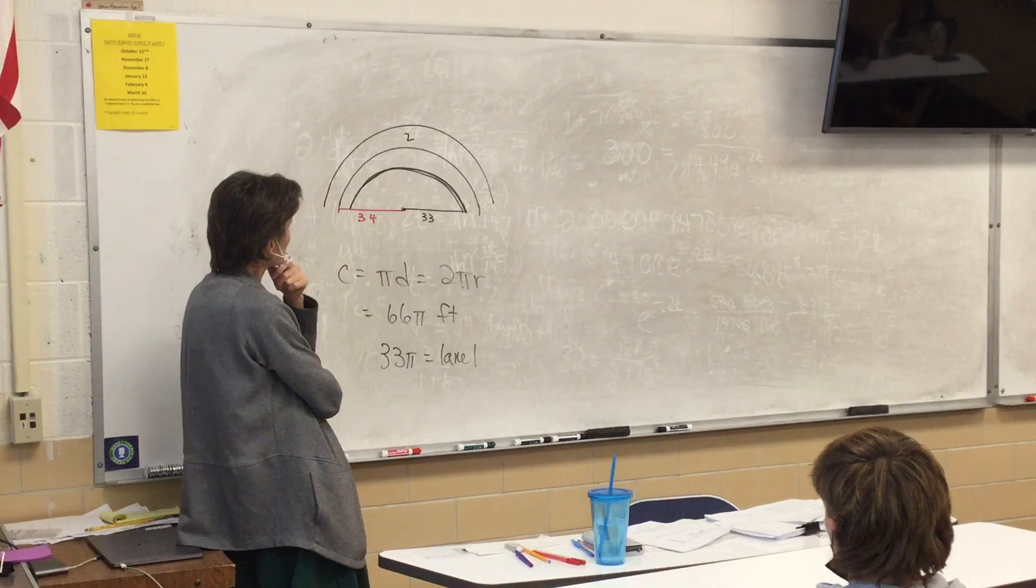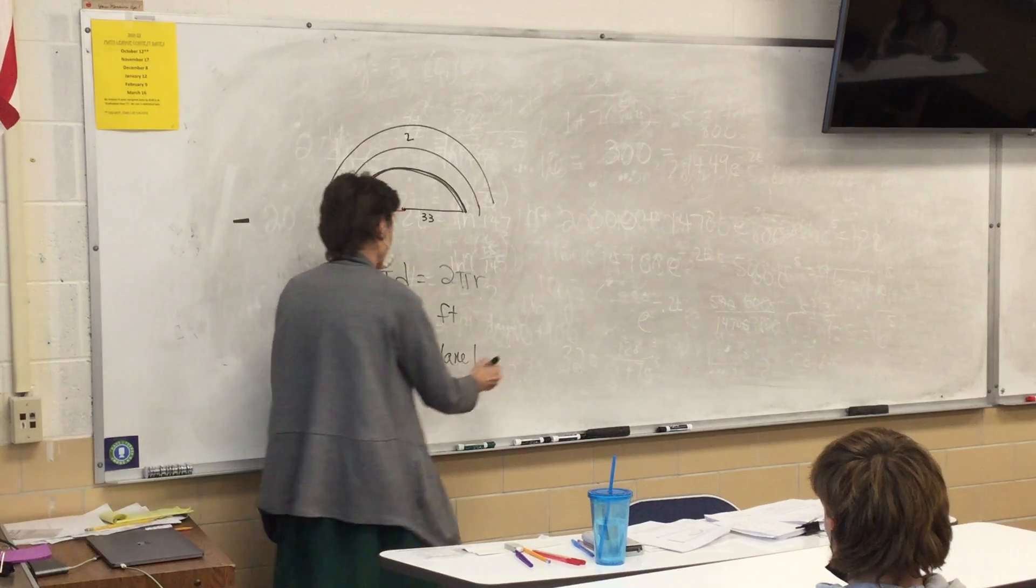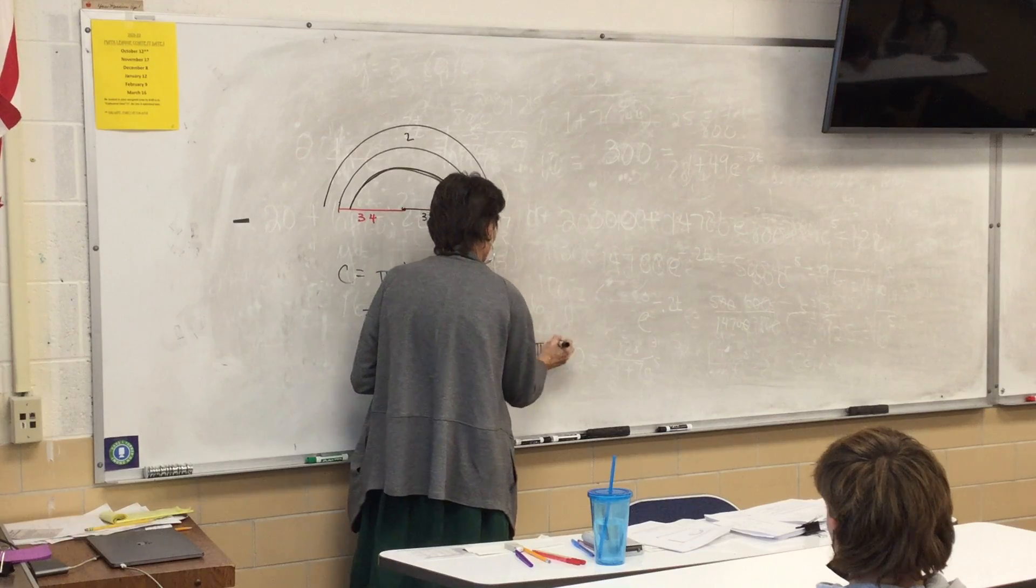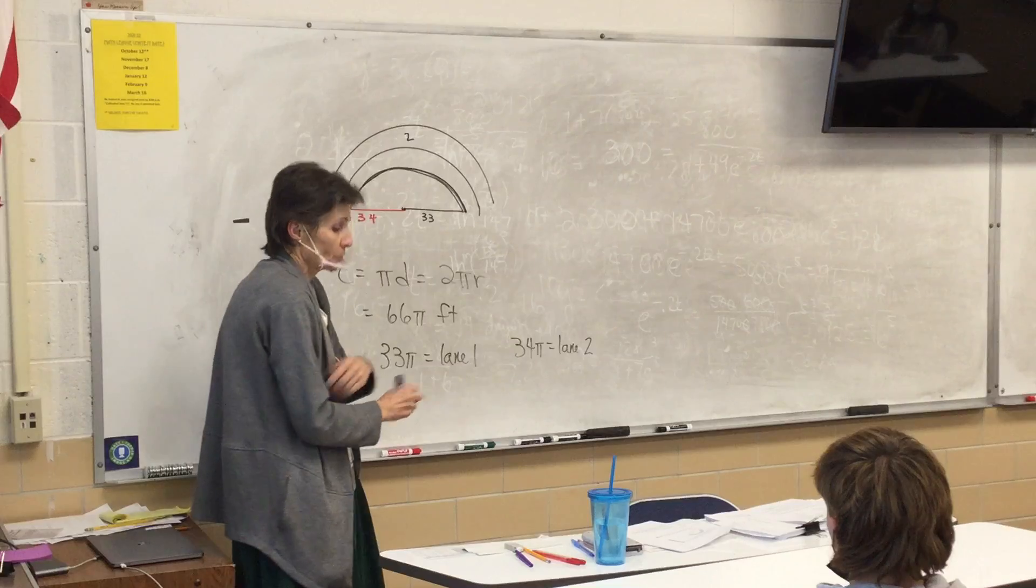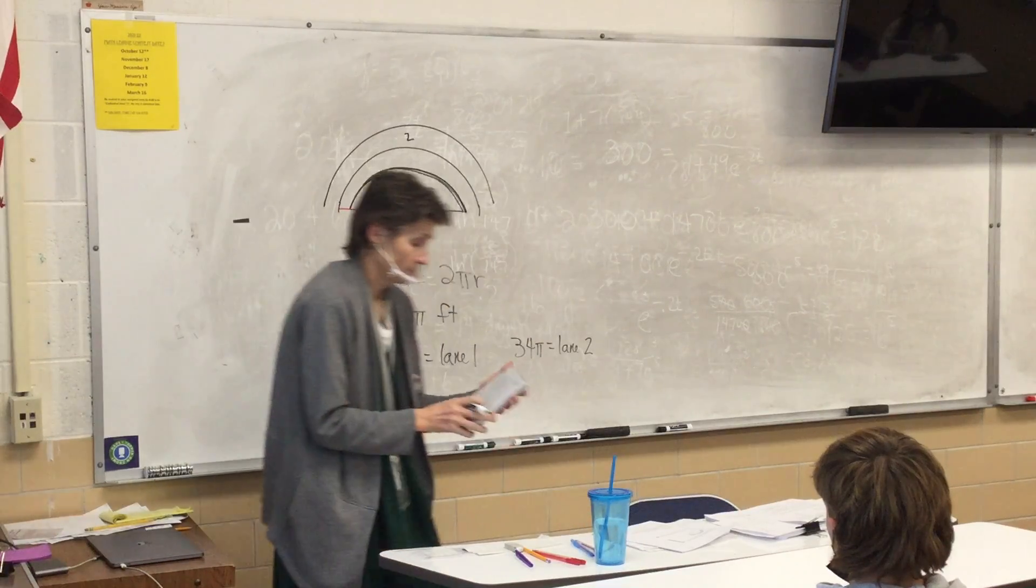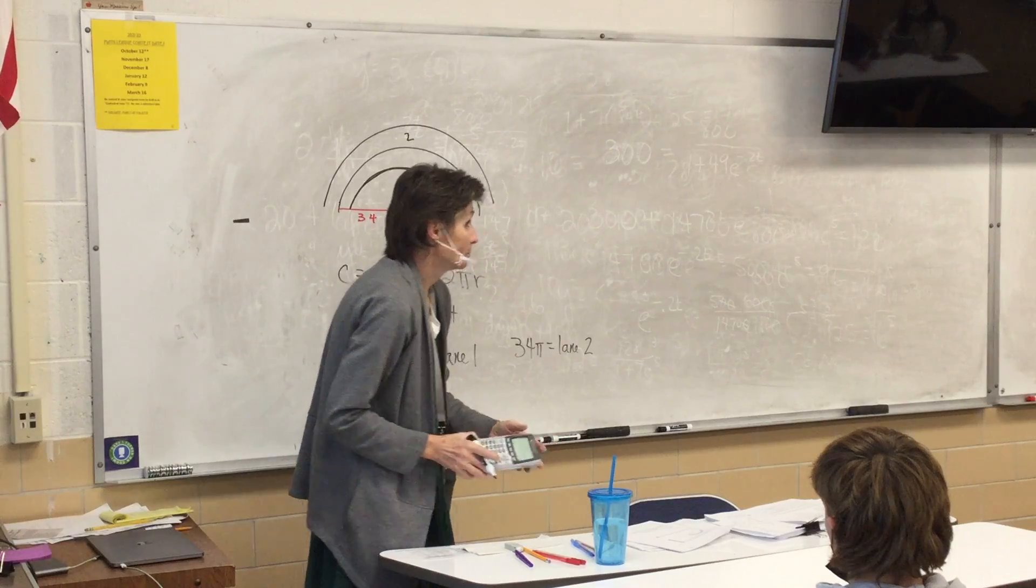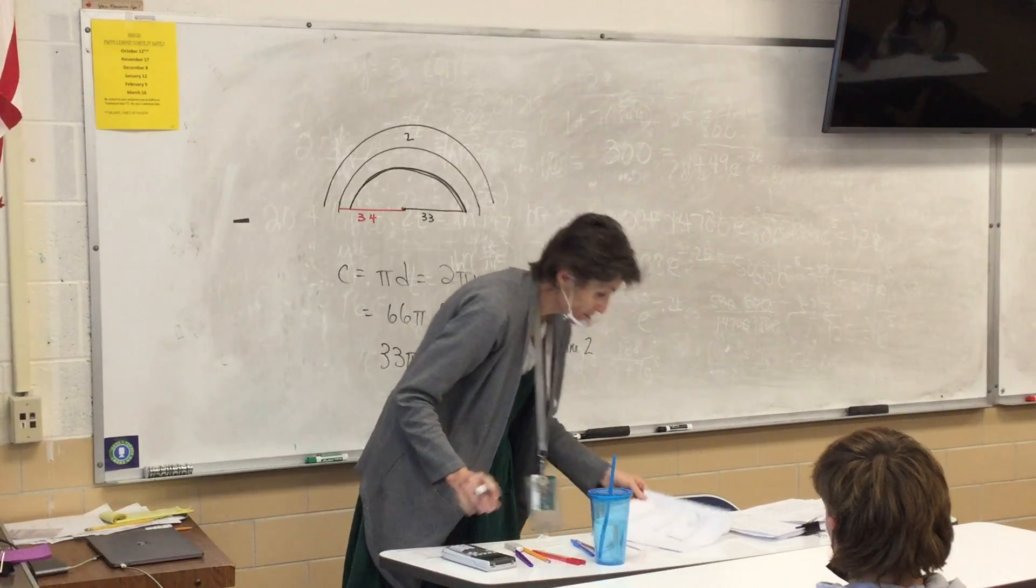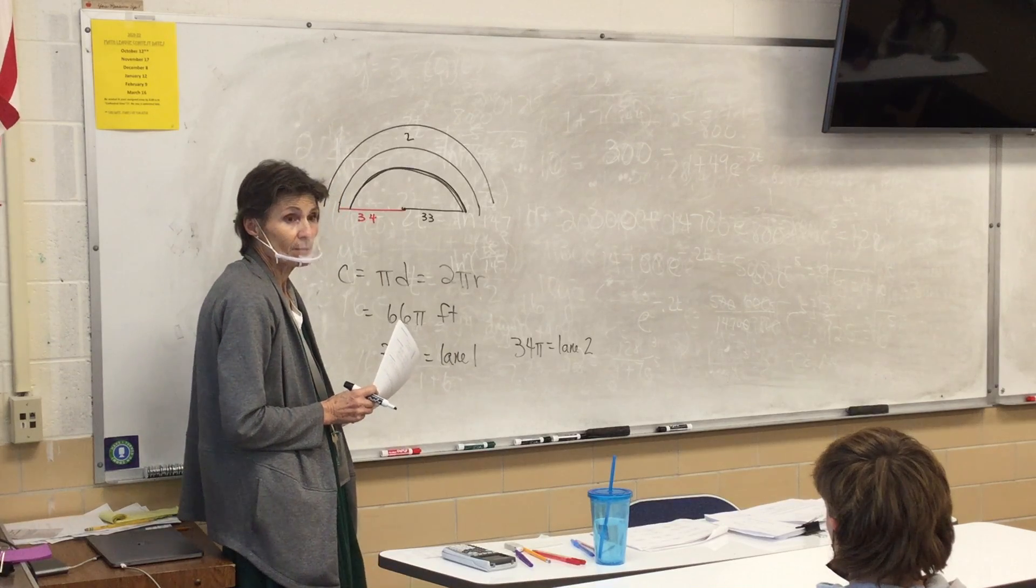All right, now what about lane 2? Won't it just be 34 pi? So how different are they? 3.14 feet, meters. Does that make sense to everybody?